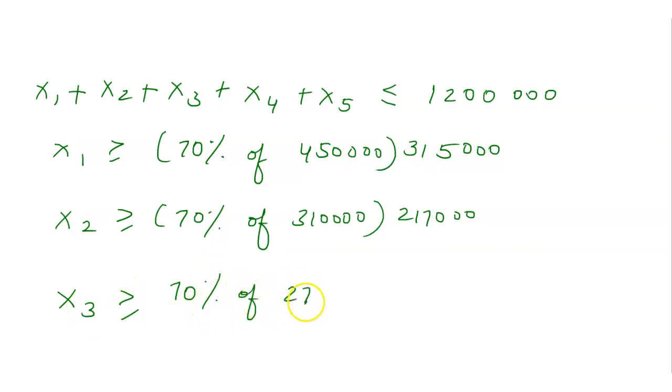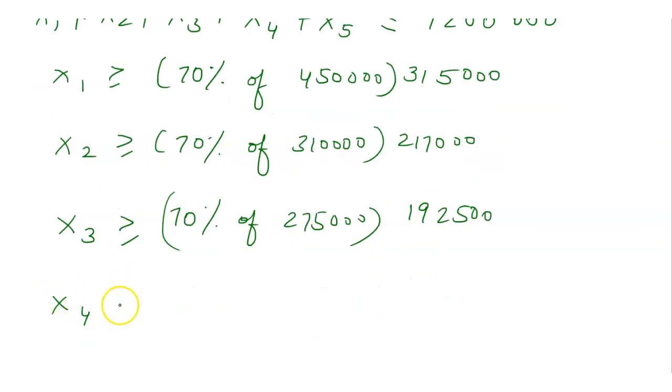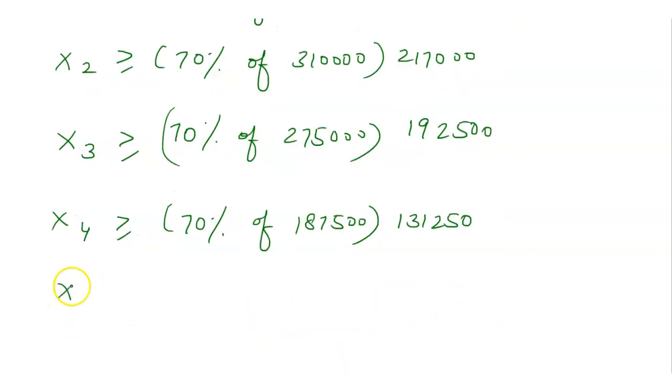70% of 275,000, which is 192,500, x4 is greater than or equal to 70% of 187,500, which is 131,250, and x5 is greater than or equal to 70% of 135,000, which is 94,500.